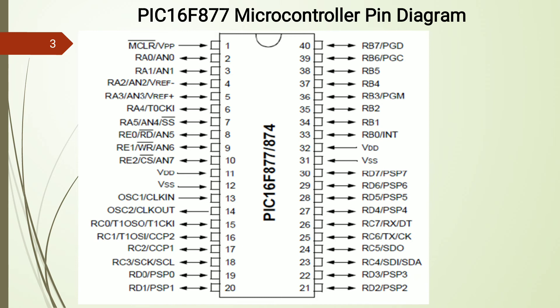After the supply connections at pins 32 and 31, Port B begins at RB0 on pin 33 and ends at RB7 on pin 40. Generally, one external interrupt is connected at RB0 as INT. For in-circuit programming and debugging, the PGC, PGD, and PGM pins are used for programming the controller.